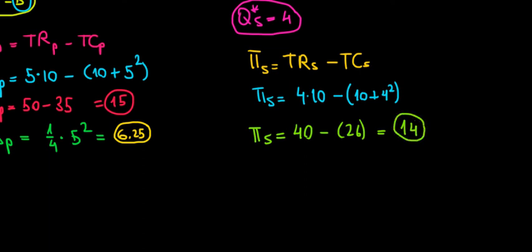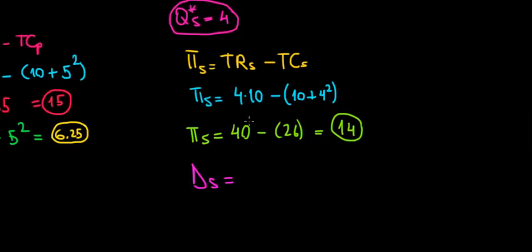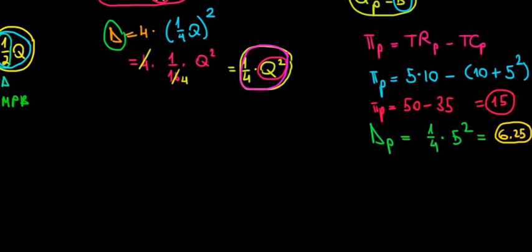What is the damage under the social optimal? The damage function is (1/4)Q², so that's (1/4) × 4² = 16/4 = 4. The damage equals $4. That's it for this part — next video we solve part C.